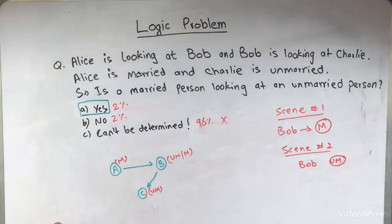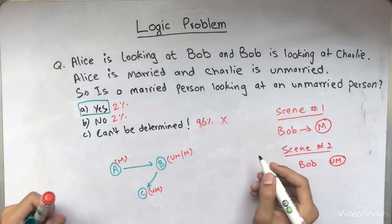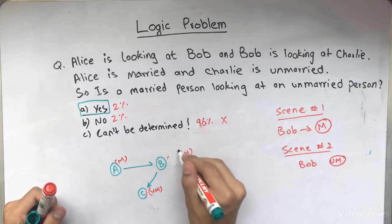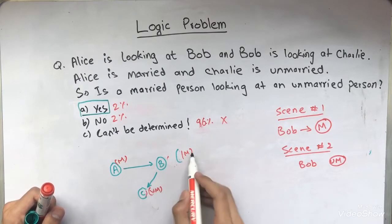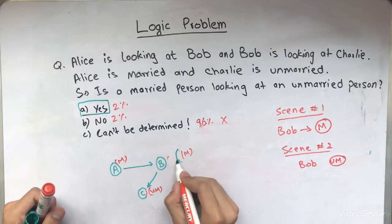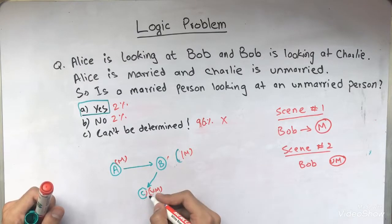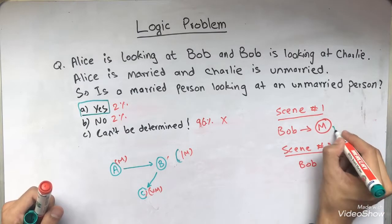So in scene one, as we said, Bob, either he's married or not. I'm going to, first of all, erase the unmarried thing from here and then look at the situation. In this case, we can see that Bob, you're considering him married. He's looking at Charlie, who is unmarried. So married person is looking at an unmarried person. So the answer is going to be yes.